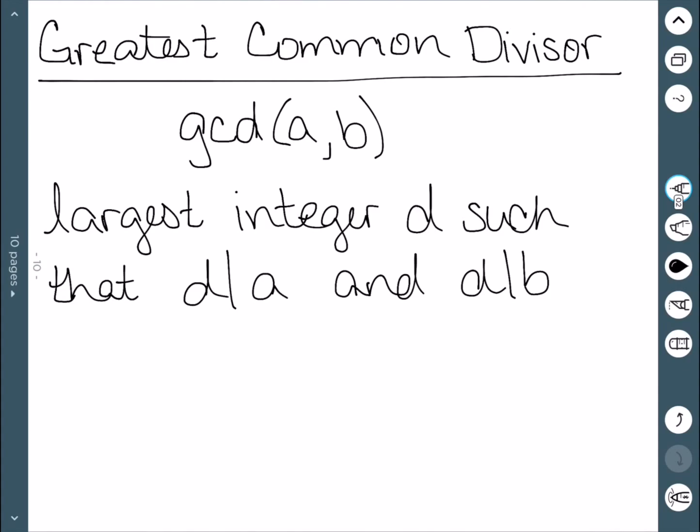So it's exactly what it says. The greatest, it is the largest possible number that works. The divisor part means it needs to divide both numbers. And the common, it does have to be common and actually divide both. So it's the greatest number that divides both of our two numbers.